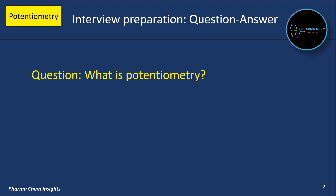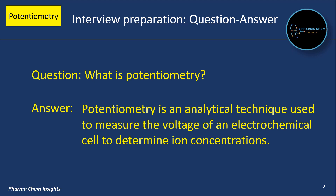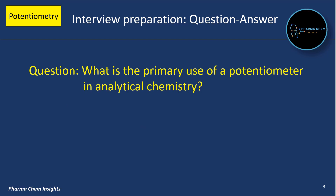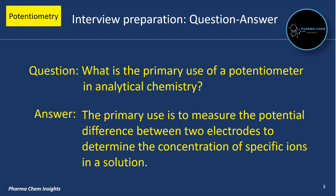First question: what is potentiometry? Potentiometry is an analytical technique used to measure the voltage of an electrochemical cell to determine ion concentrations. Next question: what is the primary use of a potentiometer in analytical chemistry? The primary use is to measure the potential difference between two electrodes to determine the concentration of specific ions in a solution.